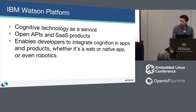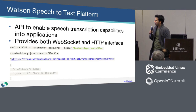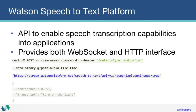The Watson speech-to-text service has an open API — both HTTP-based and WebSocket-based — to transcribe speech into text. It currently supports eight languages and also supports custom models and custom acoustic data to give context for transcription. Here's a simple example: you use a curl command to send a POST request with an audio file to the speech-to-text service, and it transcribes the speech and gives you back the result with a confidence score.